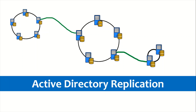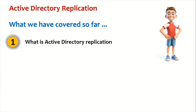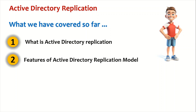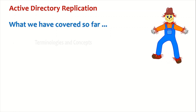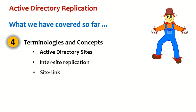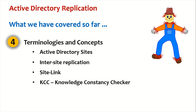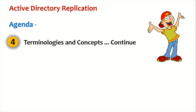Let's continue our Active Directory replication session. We have covered what Active Directory replication is, its features, model properties, and we started on terminologies and concepts such as Active Directory sites, inter-site replication, site link, knowledge consistency checker, intrasite replication, and connection objects.